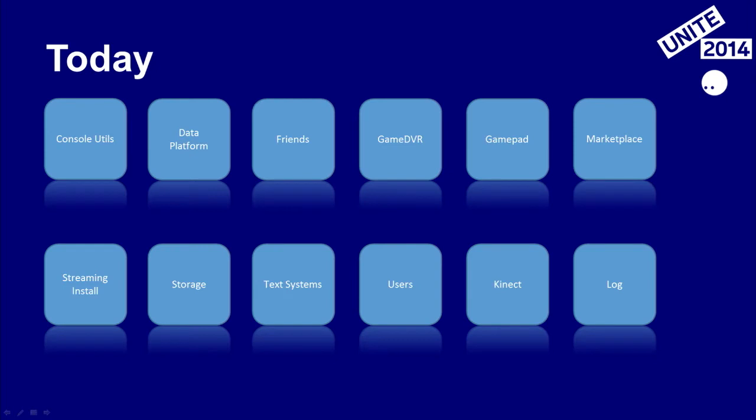This is what we have today: console utils, data platform, friends, game DVR, gamepad, marketplace, streaming install, storage, text systems, users, connect, and a log plugin. The log plugin ties into the fact that we don't want a dependency on the engine itself — we want to facilitate a better debugging experience without coupling to UnityEngine.dll.